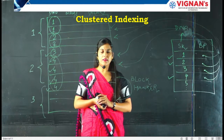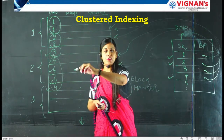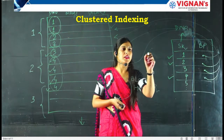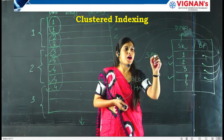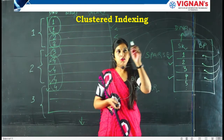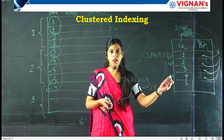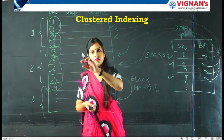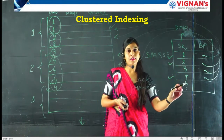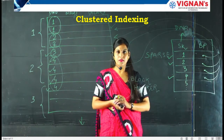This is clustered indexing. We see that for each cluster we are making only a single entry in the index table, which means it is a sparse index. It is sparse because we are not making individual entries for individual records in the index table — for multiple records in the database file we use a single entry in the index file. So clustered indexing is a sparse index, not a dense index.